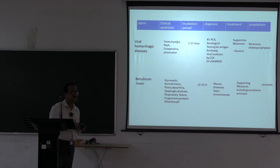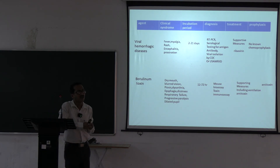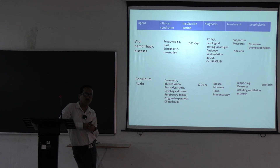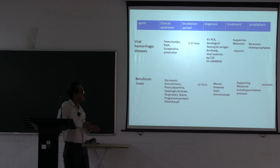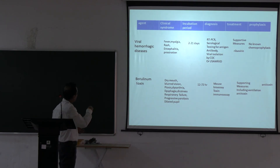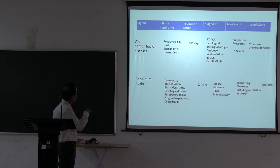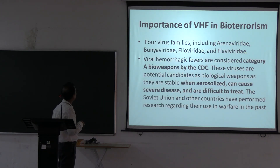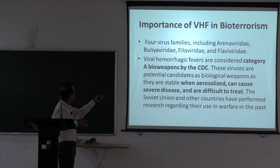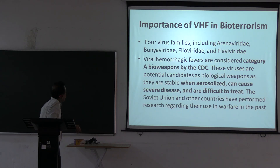Viral hemorrhagic fevers: Marburg and Ebola are filoviruses; Machupo is an arenavirus. All cause hemorrhagic fever and are Category A agents. When aerosolized, these viruses can cause severe disease. There is no treatment and no vaccine for any of them, with mortality around 90%.